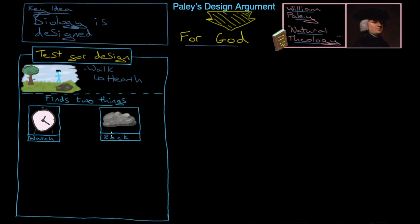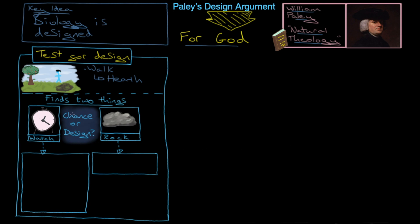Now remember, he's trying to establish a test for design here. He's trying to work out why he would think that, say, a watch is designed, even if he'd never seen a watch before, whereas a rock isn't designed. He says, ultimately there are two things: do they arise by chance or do they arise by design? Well, he says, the rock is simple. It's perfectly possible that it arose by accident. So, not designed.